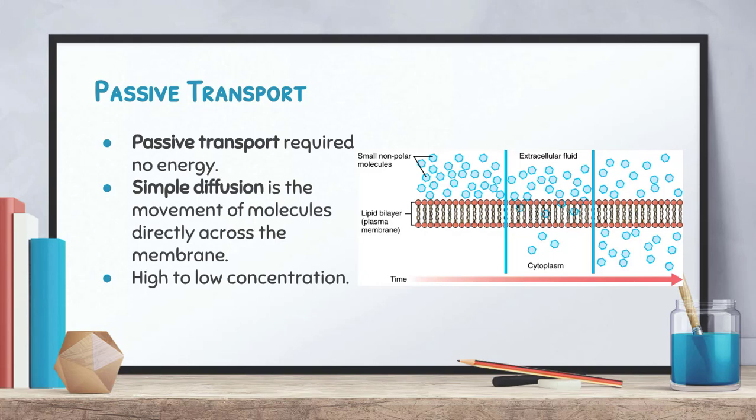These molecules also move from a high to a low concentration. A good way to think about that: if somebody sprays perfume in class, most people can smell it right away because there is a high concentration of those molecules. But as diffusion occurs, those molecules spread evenly throughout the classroom. When they spread evenly you can't smell them anymore — that's movement from a high concentration to a low concentration, and it requires no energy.